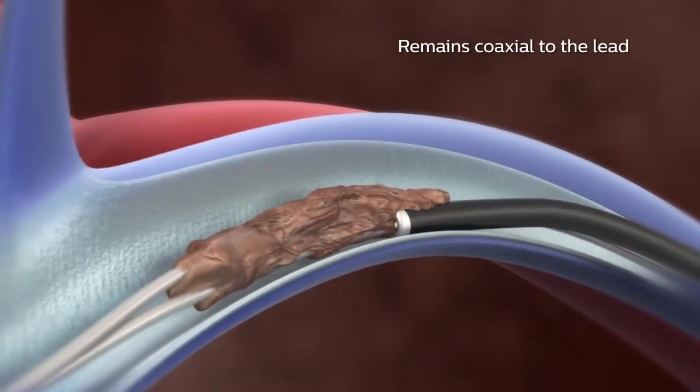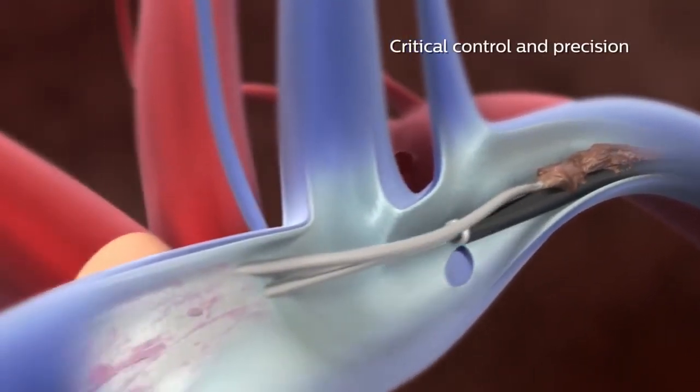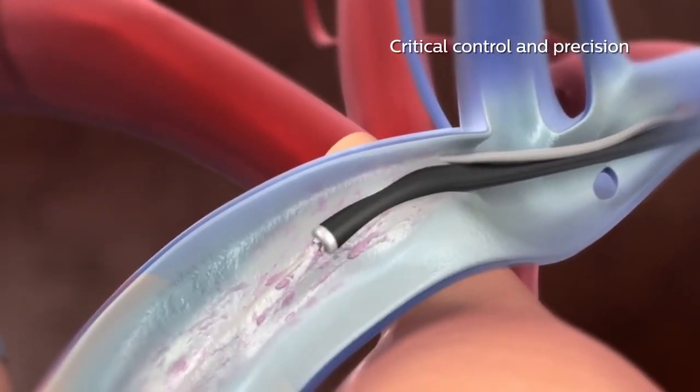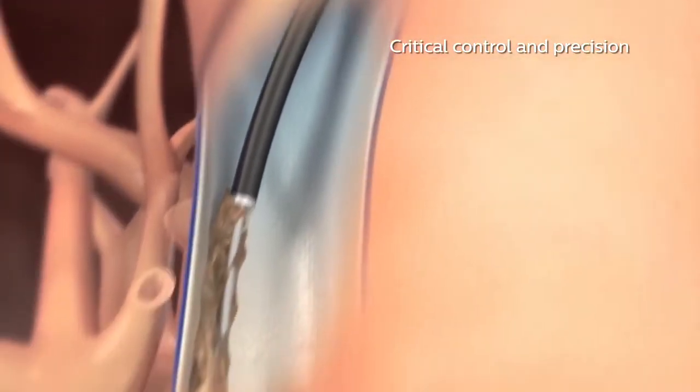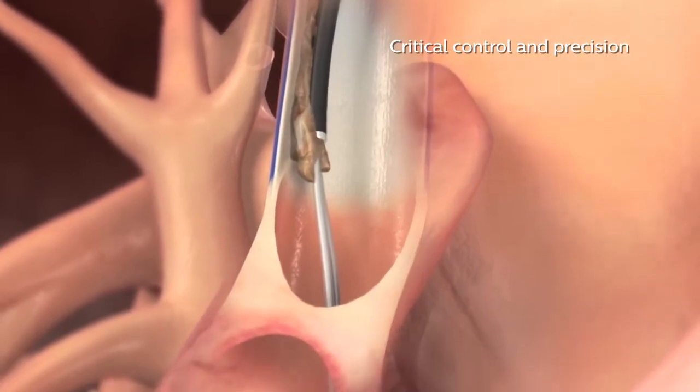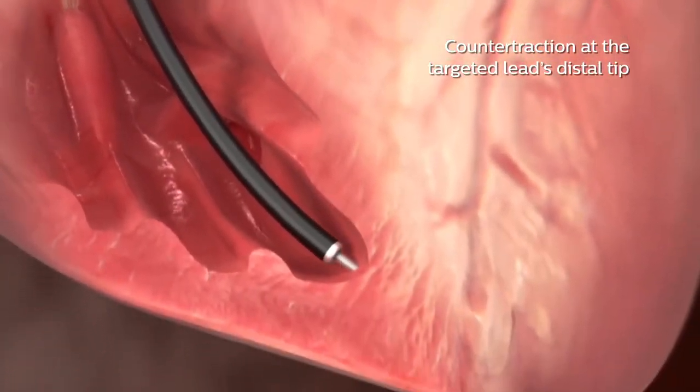Tightrail's flexibility helps the device remain coaxial to the lead. With its flexibility, shielded blade, and static shaft, Tightrail provides the critical control and precision you're looking for in lead extraction procedures. The shielded cutting tip design provides counter traction at the targeted lead's distal tip.